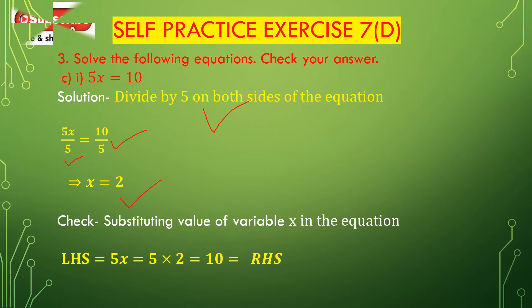Now we check whether left hand side is equal to right hand side. Substitute x = 2 in the equation 5x = 10. On the left hand side, 5x = 5 multiplied with 2 = 10, which is equal to the right hand side. So x = 2 is satisfied in this equation. The value for the variable x is 2.